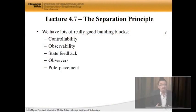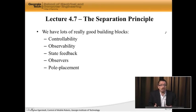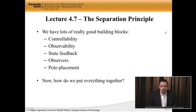So now, we have lots of really good building blocks. We haven't yet put them together because we don't fully know how they fit together, but we have lots of cool things. We have controllability that tells us whether it's possible to control the system if we have access to the state, and we do that using state feedback. We have observability, which tells us whether it's possible to figure out the state from the output, and we do that by building observers. We have pole placement, which allows us to place the closed loop eigenvalues wherever we want. The big question now is, how do we put everything together?